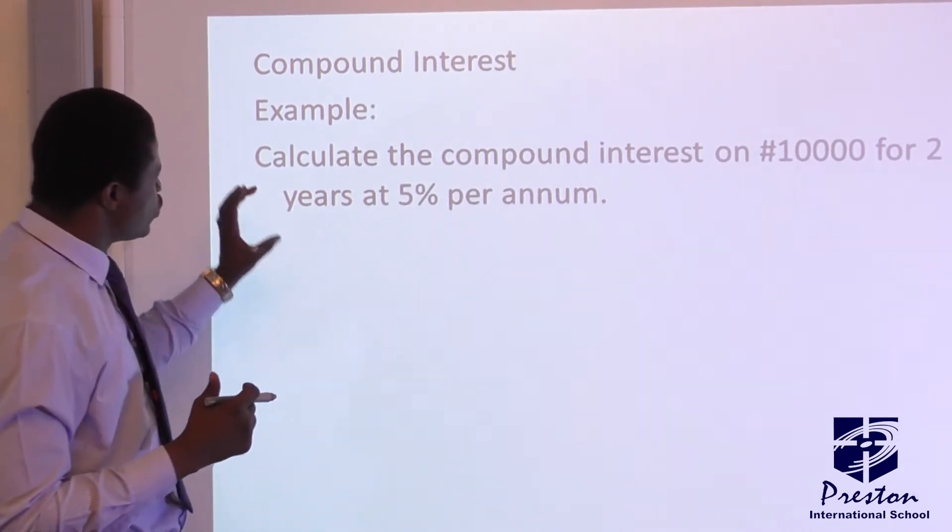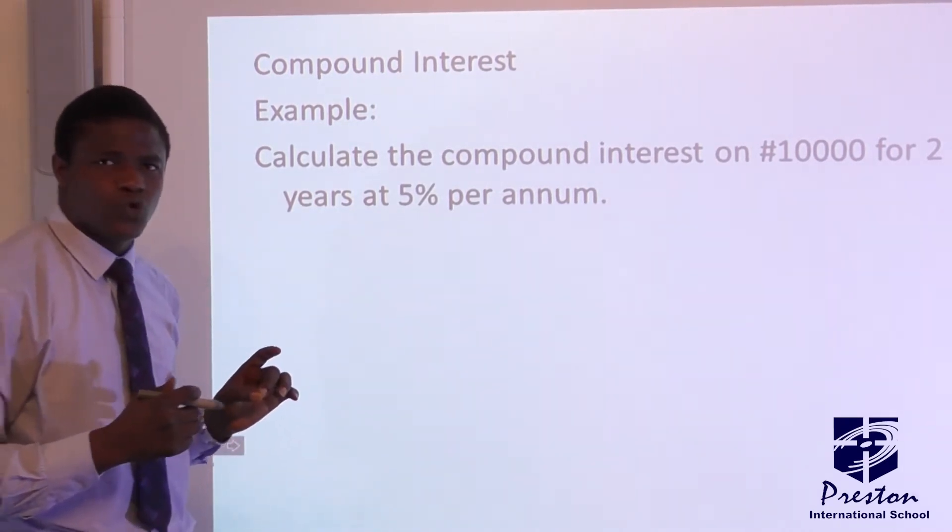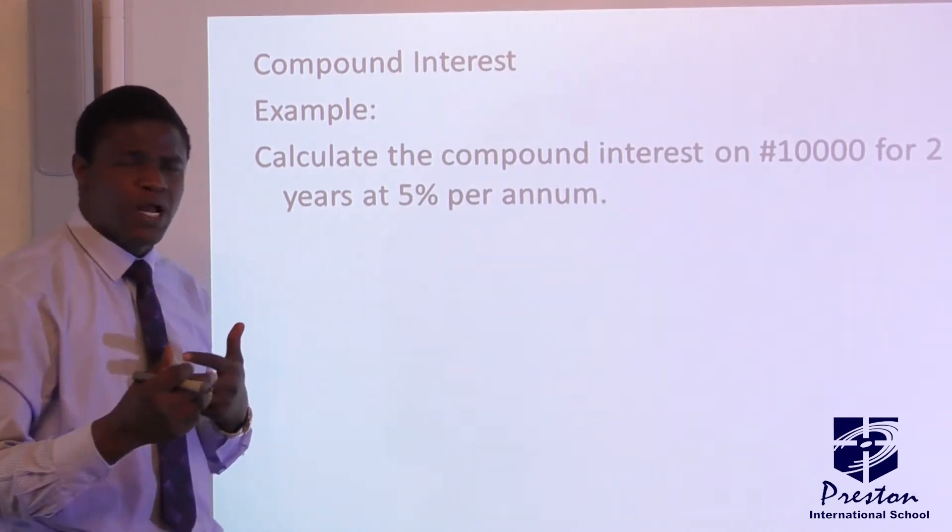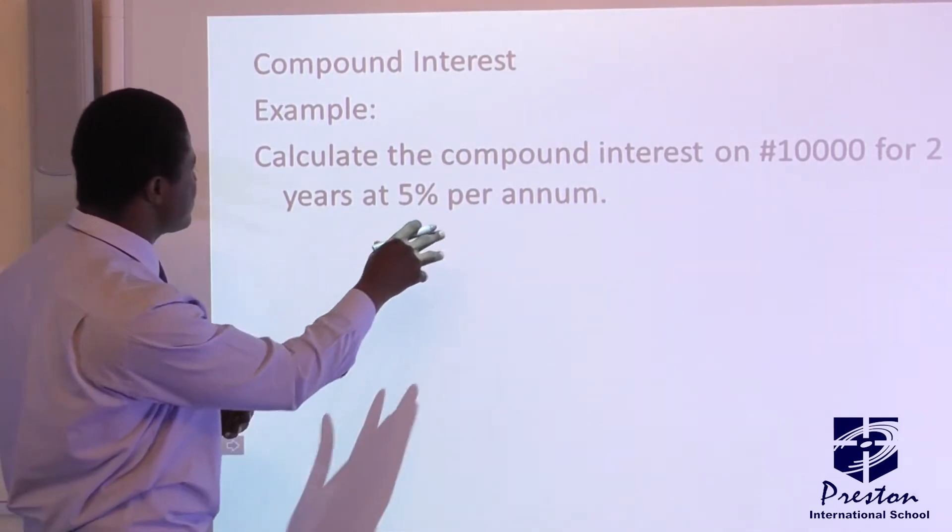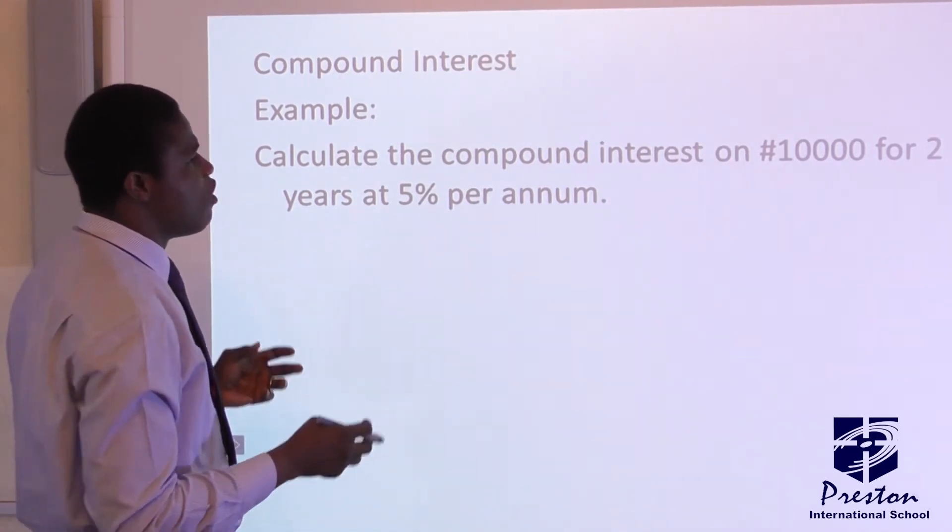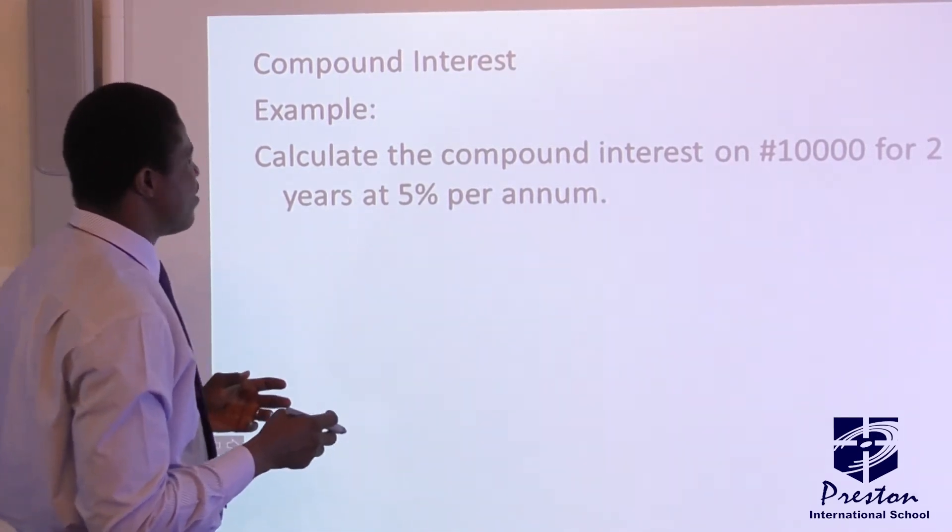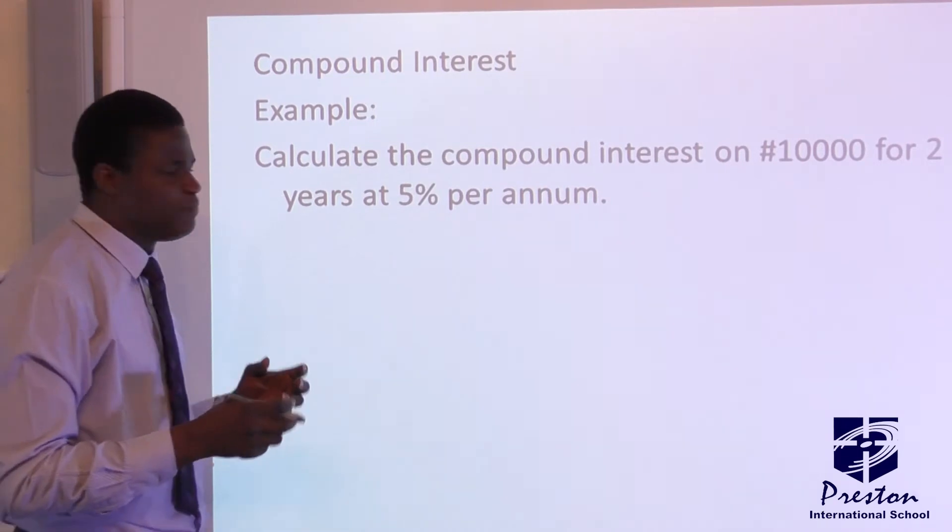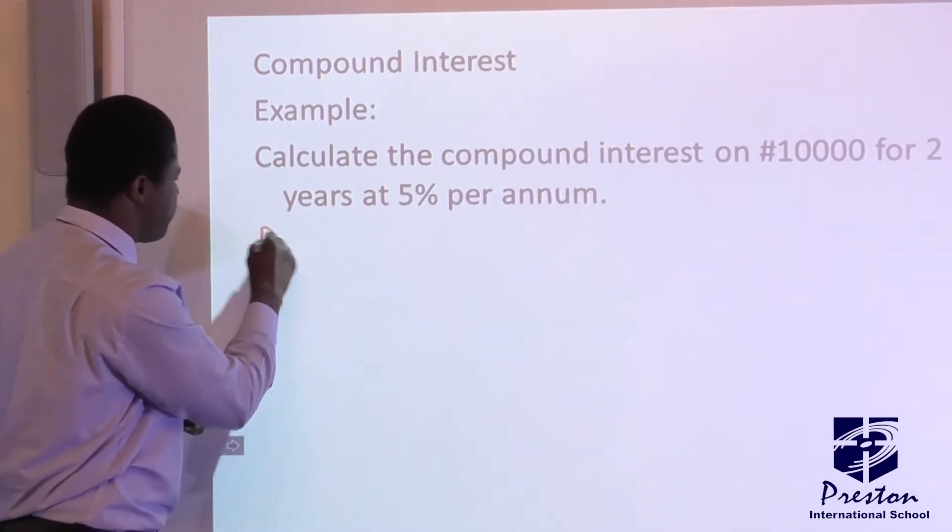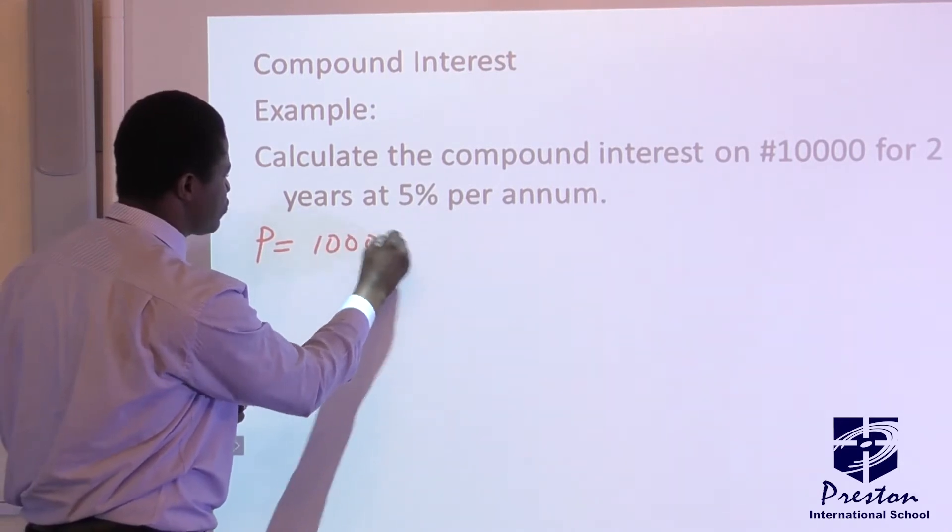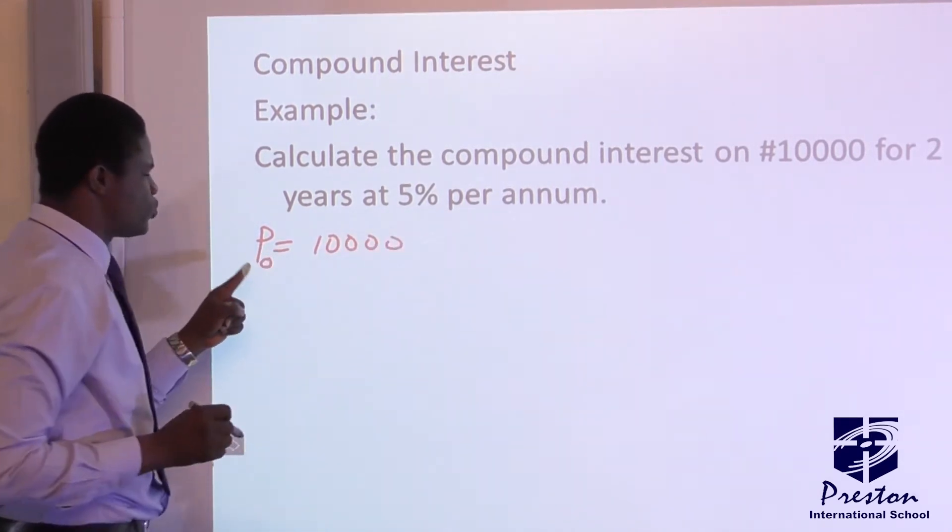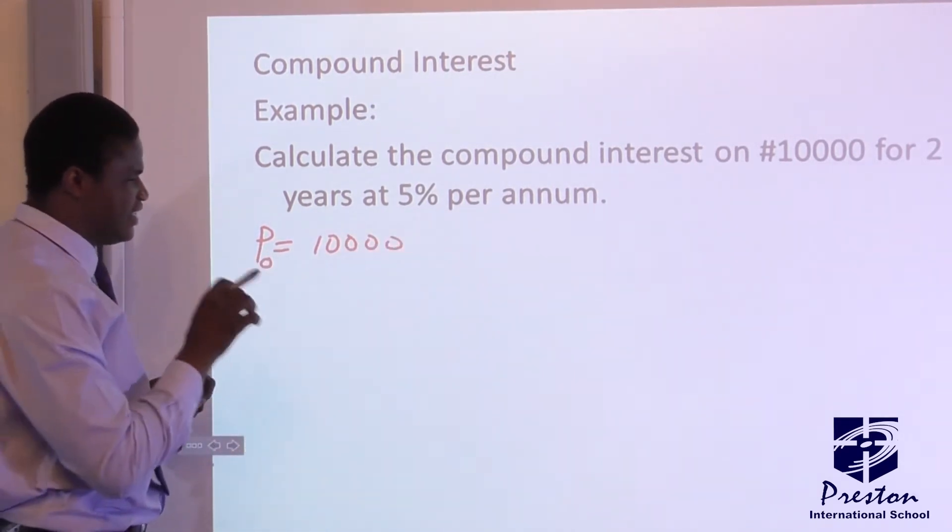So now we are going to use this simple example to explain this. Then when we get to Google Classroom, we will now solve more taxing questions. For instance, in this case, calculate the compound interest on 10,000 Naira for two years at 5% per annum. In this case, our principal is equal to 10,000. That is the initial principal. We put zero here. That is the initial principal.